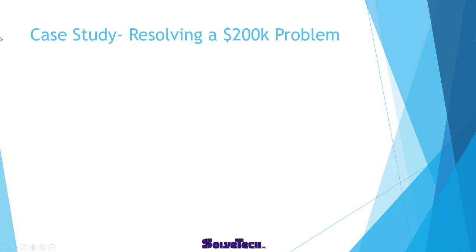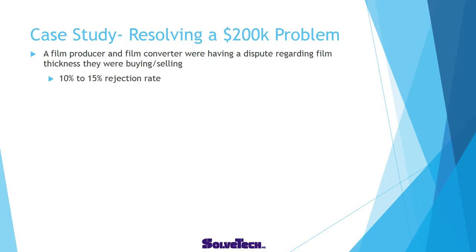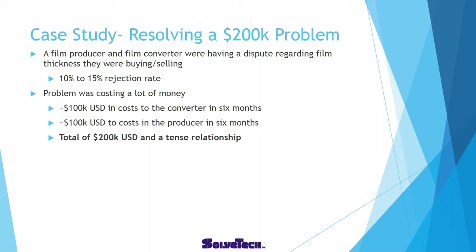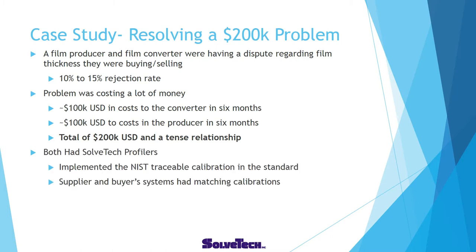Let's get into our first case study: resolving a $200,000 problem. We had a film producer and a film converter having a dispute regarding film thickness of what they were buying and selling. They had a 10% to 15% rejection rate. The material would get to the converter, they'd take it to the line, find it wasn't the right thickness, repackage it, and send it back. It was costing the converter $100,000 in six months and the producer another $100,000 in six months — they had to ship material back, remake the lot, and redo the whole thing. Total cost: $200,000, and the relationship was getting very strained. The converter was one of their biggest customers.